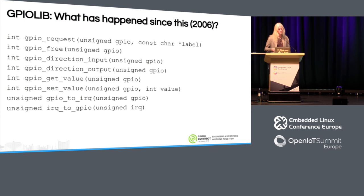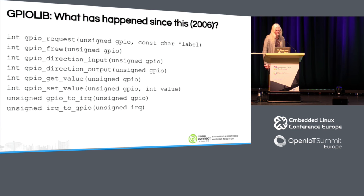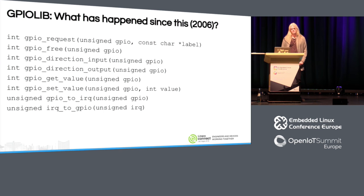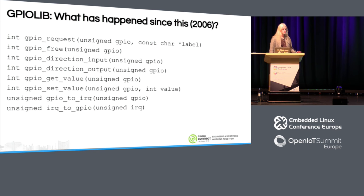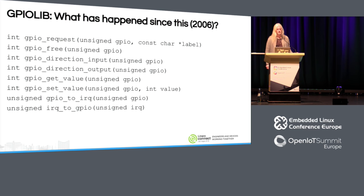David Brownell started to maintain it — not officially, but half-officially. Then David, who invented this, got very ill. Grant Likely took over the subsystem in February 2011 and started to maintain it. And in April, David died. So no more work from him on GPIO. We are very grateful for his contributions, but it's one of the things he never really could drive to the finishing line.